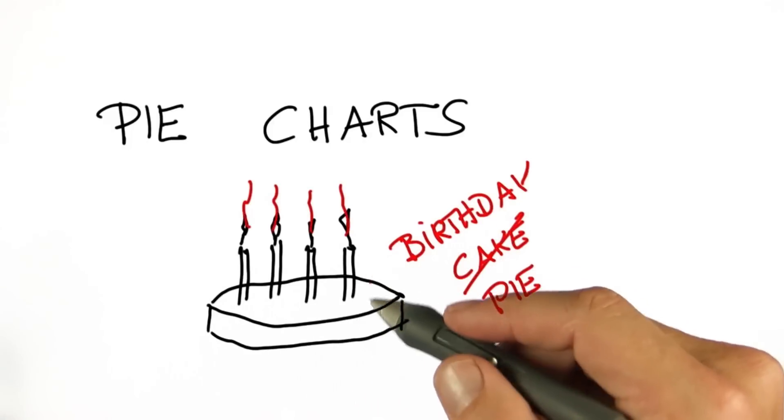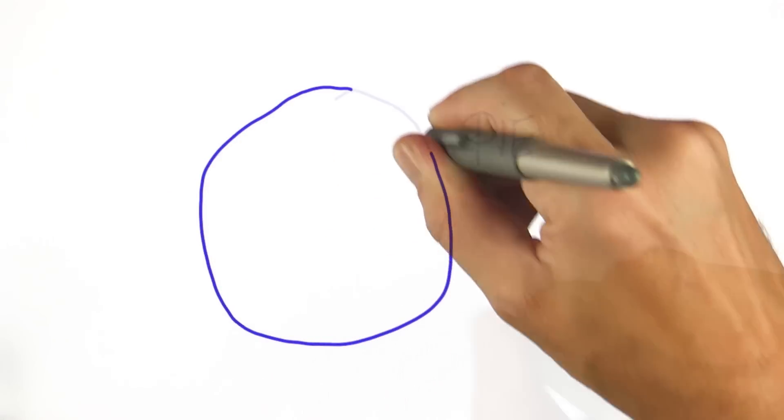And if you look at this pie from above, it looks just like this. It's a circle.